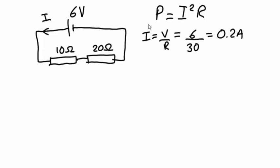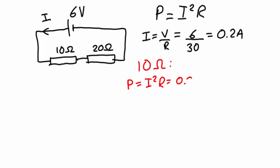Now we've got that current we can work out the power dissipated by each of the resistors in turn. Let's begin with the 10 ohm resistor. Power equals current squared multiplied by resistance. Current here is 0.2 — square that — multiplied by the resistance of 10. That will give us a power dissipated from the 10 ohm resistor of 0.4 watts.